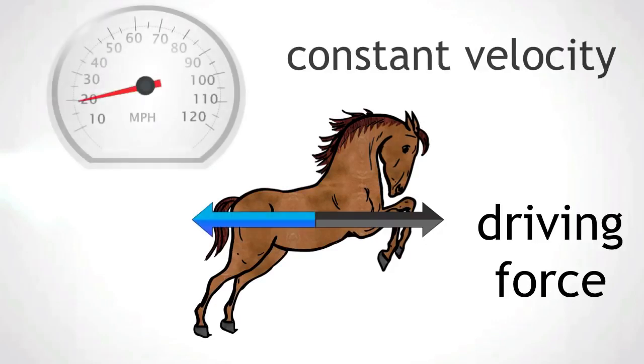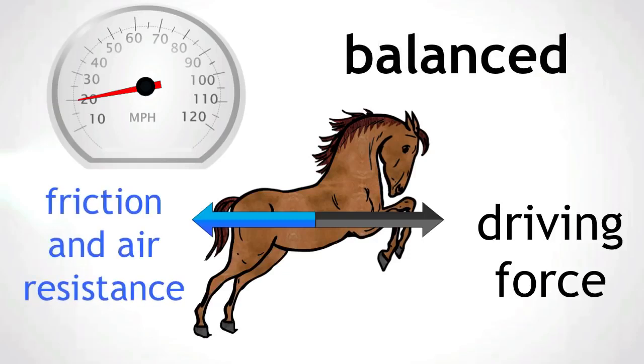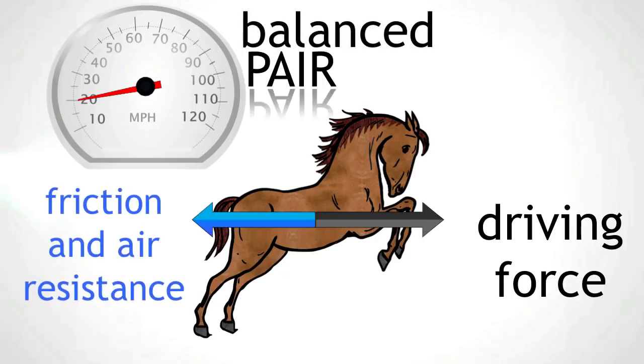If the horse is travelling at a constant velocity, the force of friction and air resistance are equal in size but opposite in direction to the driving force. The driving force is now balanced by friction and air resistance, a balanced pair of forces, and the horse now travels at a constant velocity.